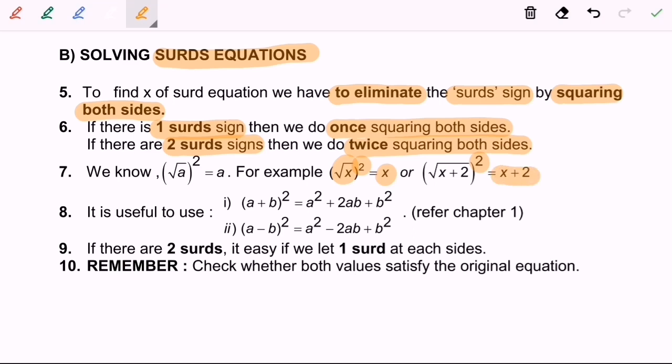It is useful for number 1. a plus b squared will be equal to a squared plus 2ab plus b squared. For number 2, a minus b squared, we will have a squared minus 2ab plus b squared. So, for further information, kindly refer to chapter 1.